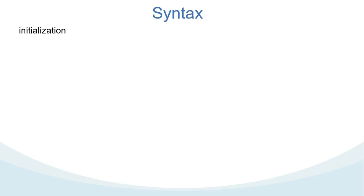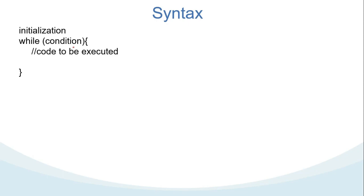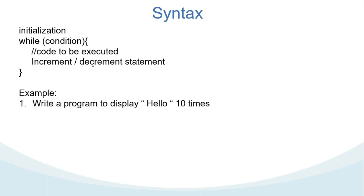Start with the initialization — it is the initial condition which is executed once when the loop starts. Then next is the while condition, which is executed each time to test the condition of the loop. It continues execution until the condition is false. Then we have the statement or code to be executed each time until the condition is false. We also have increment or decrement, which increments or decrements the variable value.